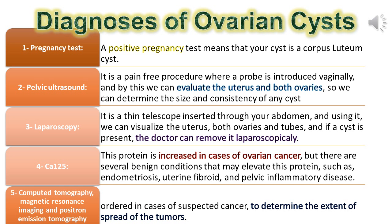Diagnosis of ovarian cysts: a pregnancy test — a positive result suggests the cyst is a corpus luteum cyst. Pelvic ultrasound is a pain-free procedure where a probe is introduced vaginally; this allows evaluation of the uterus and both ovaries to determine the size and consistency of any cysts.